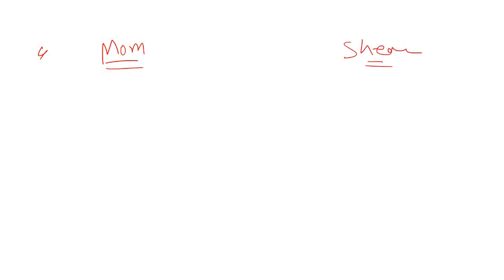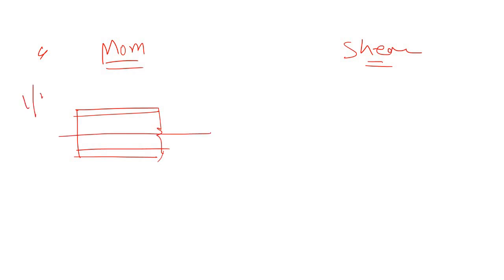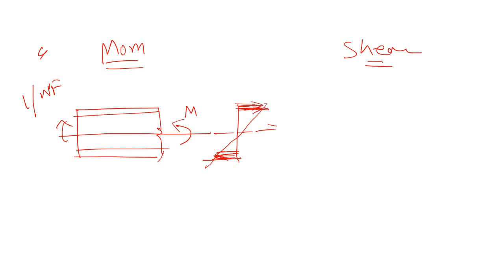Let's recap the concept of a moment connection and a shear connection. In a moment connection, the moment is transferred through the flange of the beam. If this is the I-section or wide flange section, and you apply a moment, the bending moment stress distribution is concentrated at the tip of the beam — and that tip is nothing but the flange of the I-section. Majority of the stress due to bending moment is concentrated at the flange.